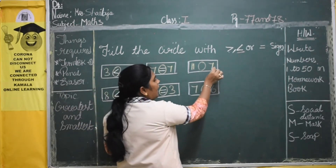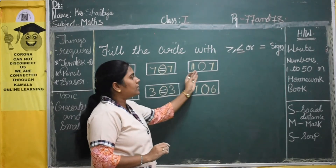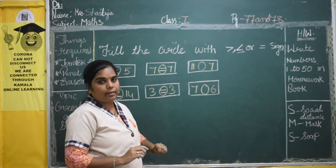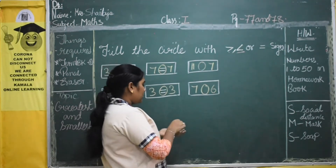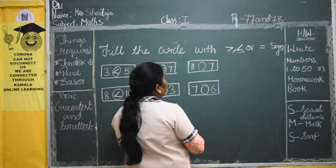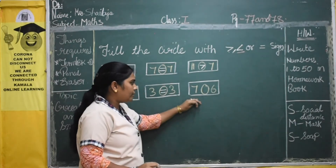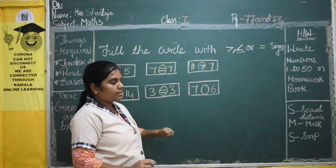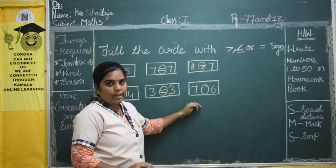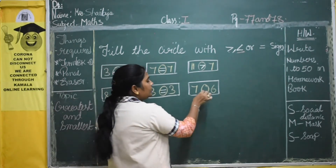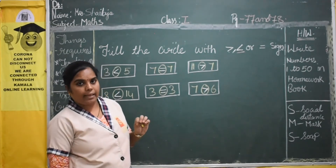Now here we have 11 and here we have 7. Both numbers are not the same — it is different. So 11 is greater than 7. And here we have 7 and here we have 6. Both numbers are not the same. So 7 is greater than 6.